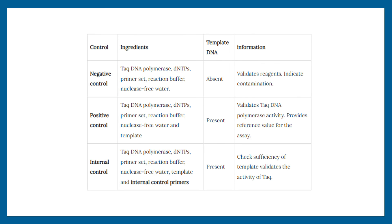In brief: the negative control does not have template DNA and provides information regarding any contamination in PCR reagents. The positive control has all ingredients present and gives information regarding Taq DNA polymerase activity, also providing a reference value for the assay. The internal control is used in multiplexing PCR reactions, with its primers added within the same tube; it checks the sufficiency of template and validates the activity of Taq DNA polymerase.